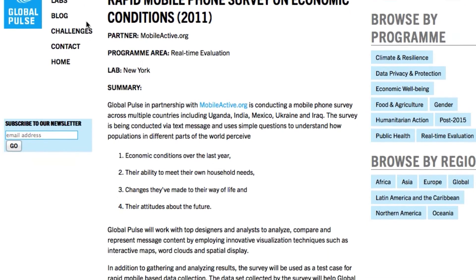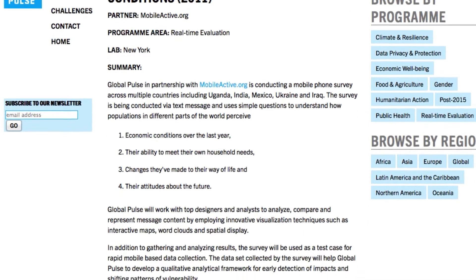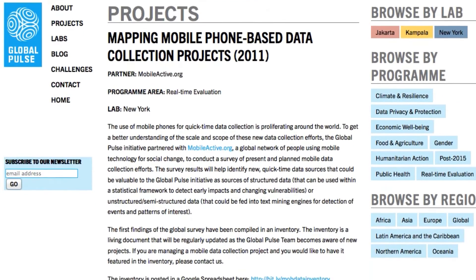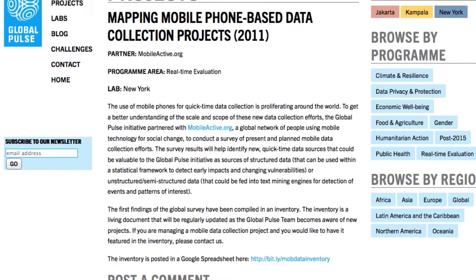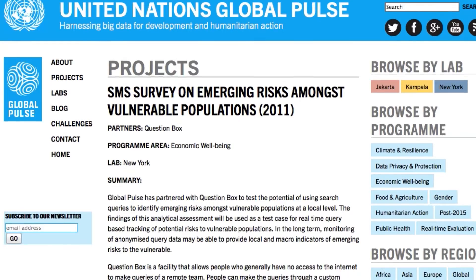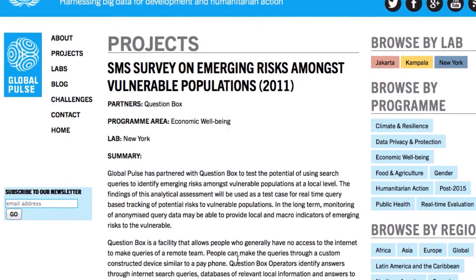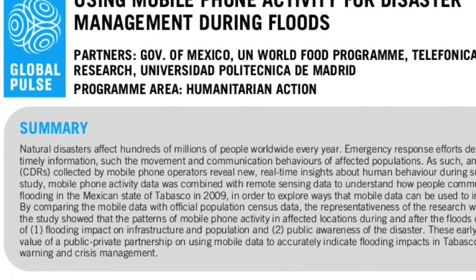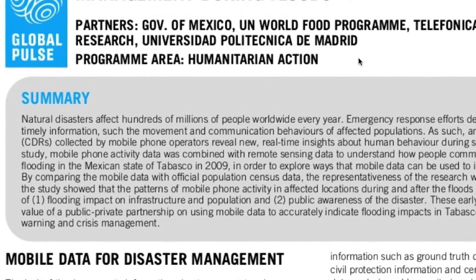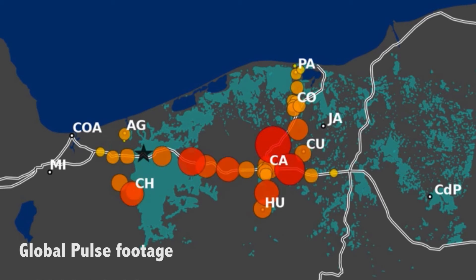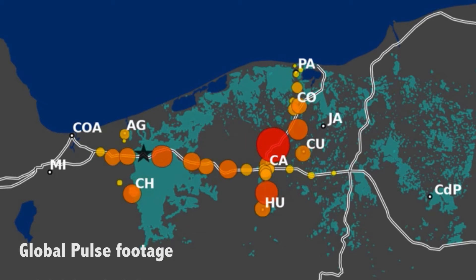How people spend money on mobile airtime credit predicts how much they're spending on food and predicts their overall level of poverty. How people move about a city, which you can see through mobile phone networks, predicts how they're being displaced by a natural disaster. How people tweet about the price of food predicts the actual food prices.